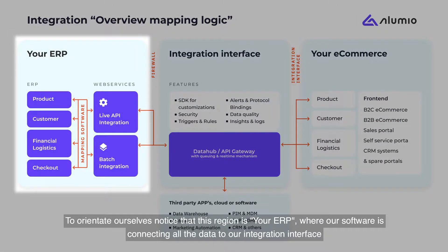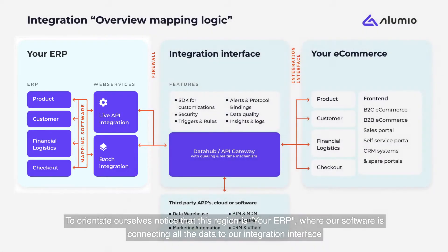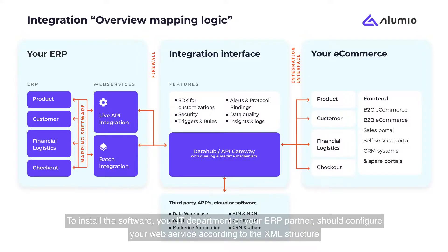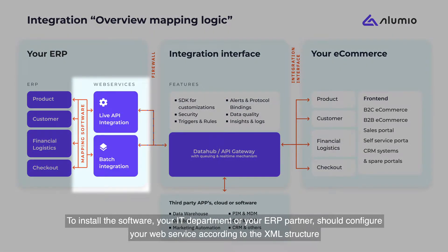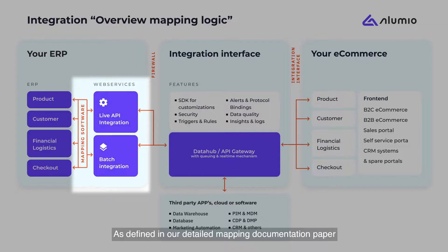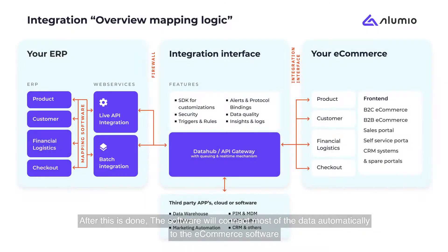To orientate ourselves, notice that this region is your ERP where our software is connecting all the data to our integration interface. To install the software, your IT department or your ERP partner should configure your web service according to the XML structure as defined in our detailed mapping documentation paper. After this is done, the software will connect most of the data automatically to the e-commerce software.